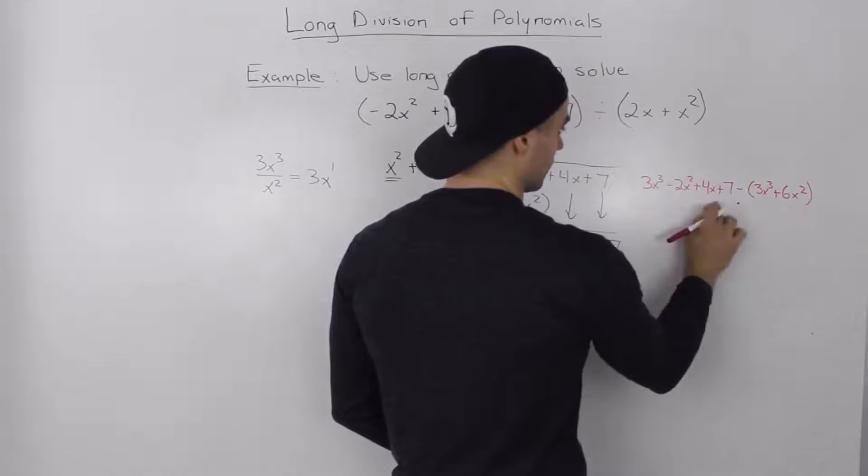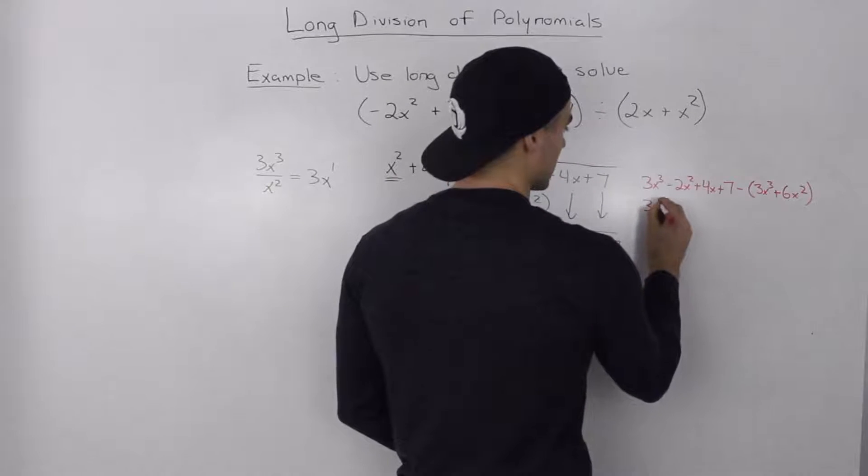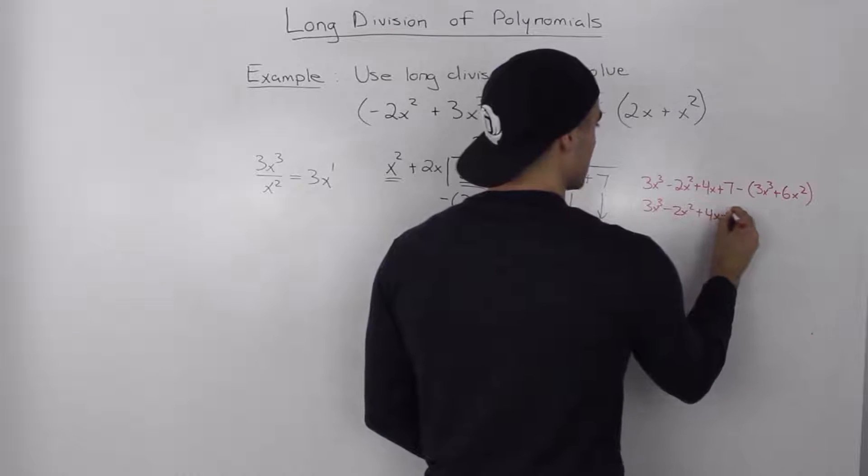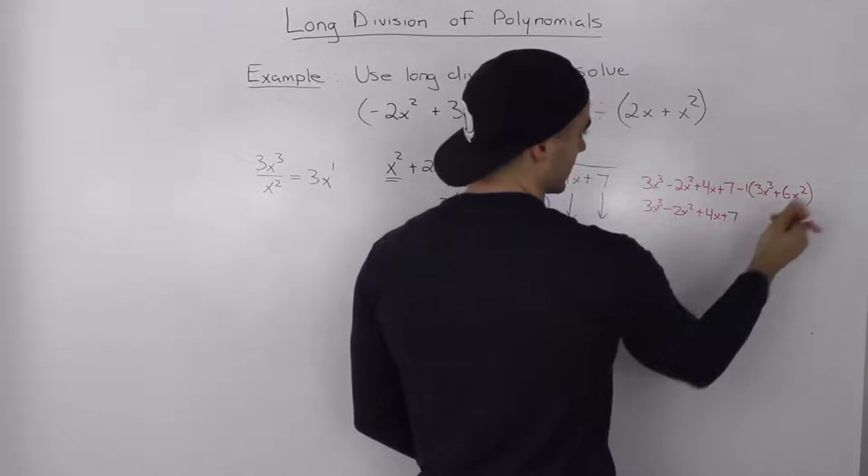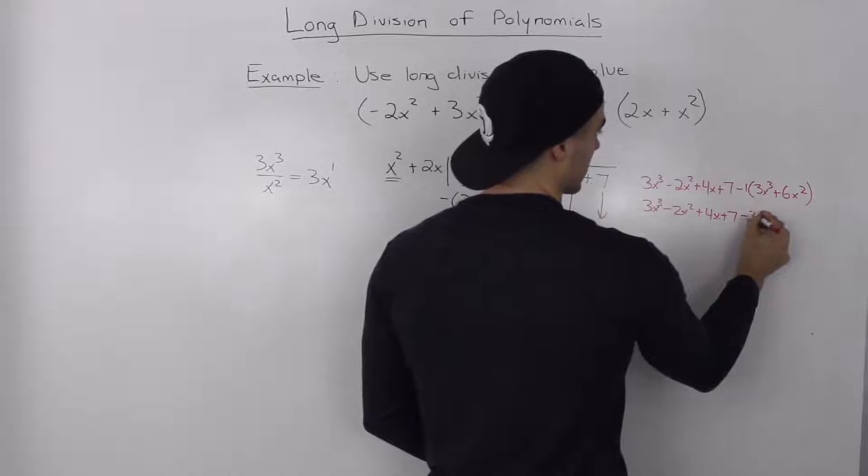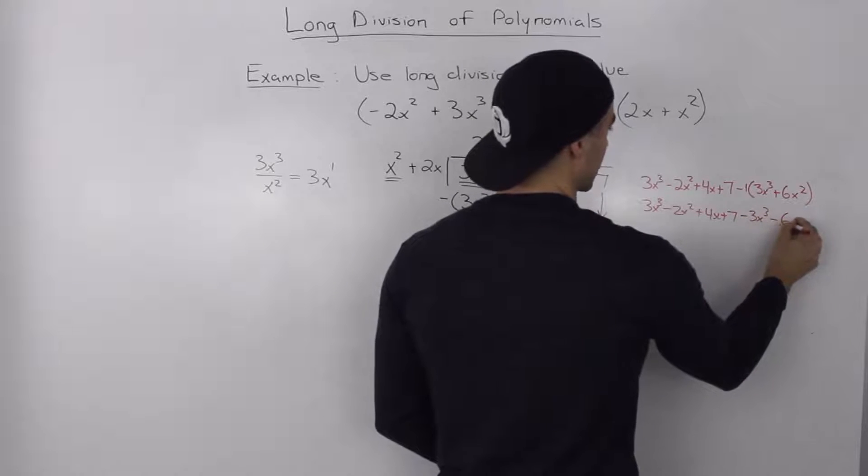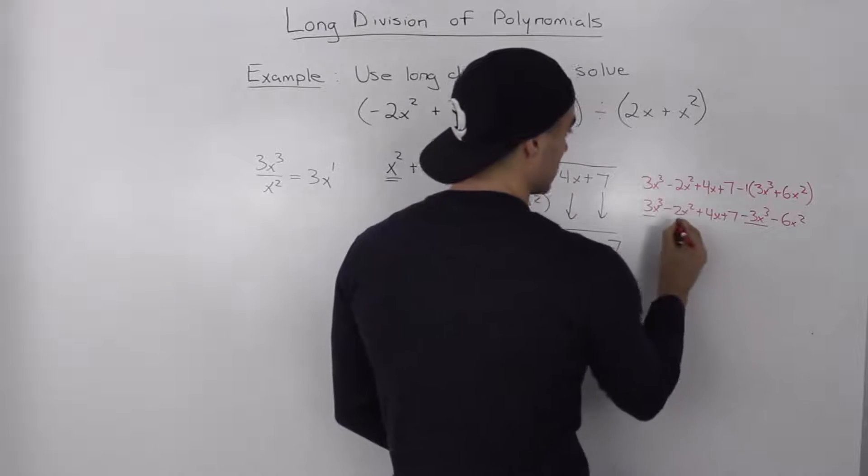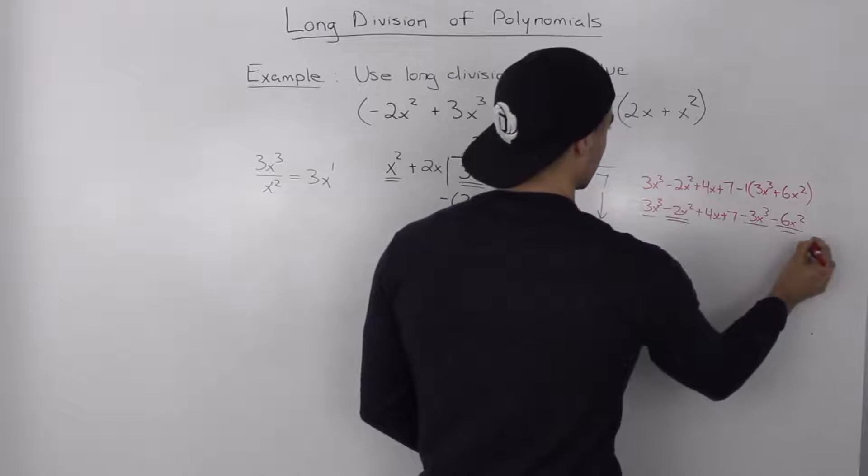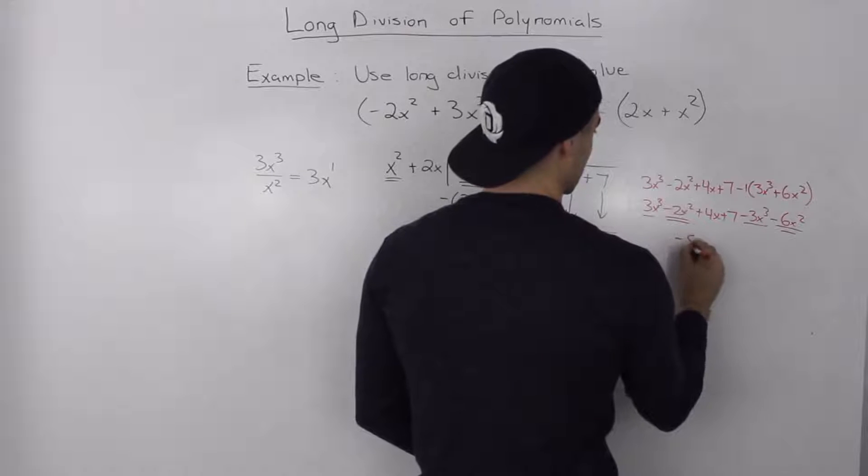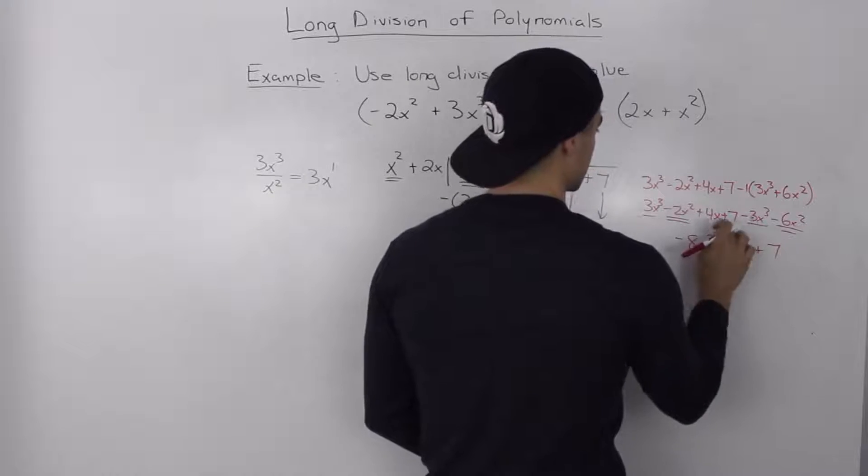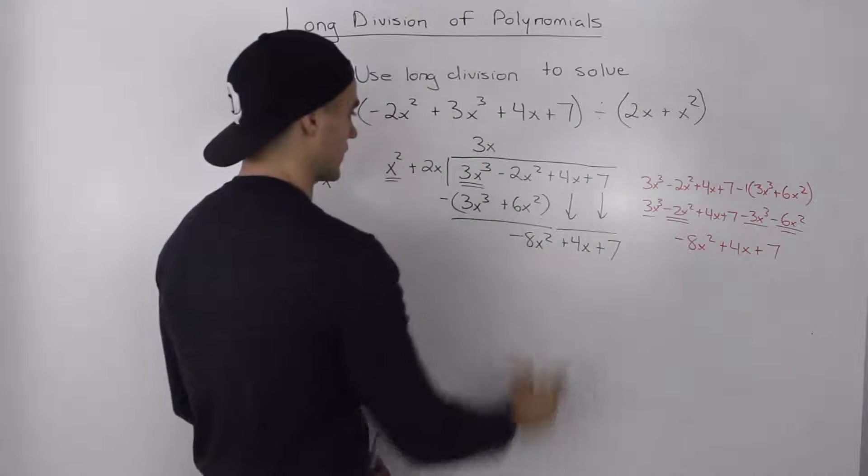So we rewrite the dividend as is, so 3x cubed minus 2x squared plus 4x plus 7. Then distribute this negative 1 inside the bracket, so we get negative 3x cubed minus 6x squared. And then this 3x cubed, negative 3x cubed, those cancel out. Negative 2x squared, negative 6x squared, those are like terms. We get negative 8x squared plus 4x plus 7. And that's what we ended up getting here.